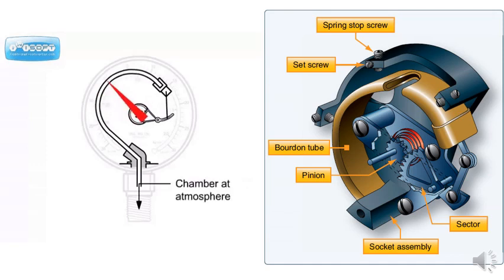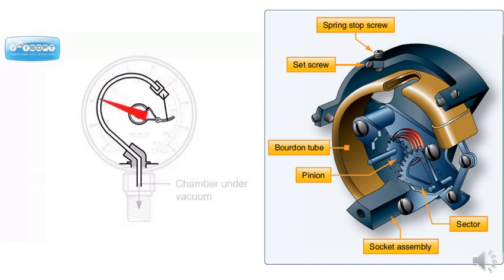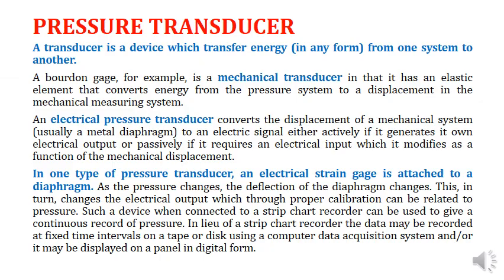Inside the Bourdon gauge, once pressure is applied, the elliptical element deflects and the mechanical reading changes on the needle and scale. According to this scale, you can read the pressure generated within the chamber of the vessel in which the fluid is kept.